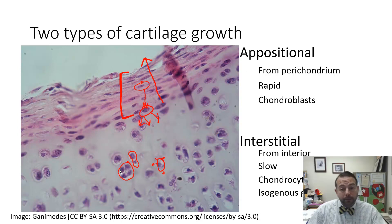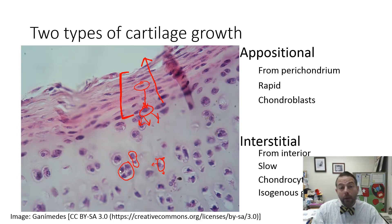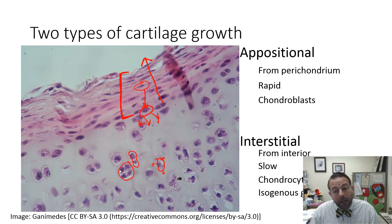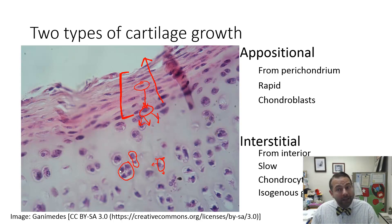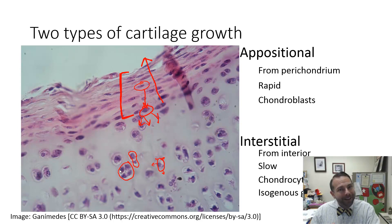So to summarize: we start with mesenchyme, proliferate and differentiate into early chondroblasts. The chondroblasts secrete cartilage matrix so quickly that they eventually get surrounded by matrix, their metabolism slows way down, and they become chondrocytes. From that point on, the cartilage can either grow from the edge rapidly via appositional growth carried out by chondroblasts, or from deep within but much more slowly, carried out by chondrocytes. All right, well that's it for now — I hope you had fun. Study hard.